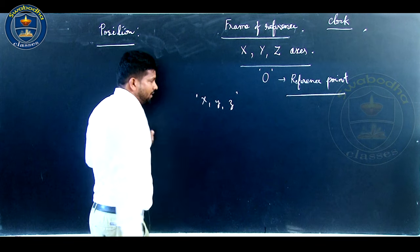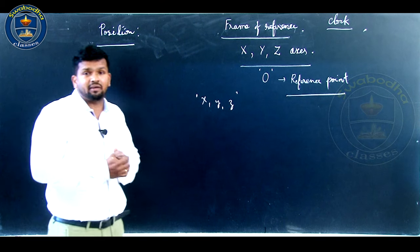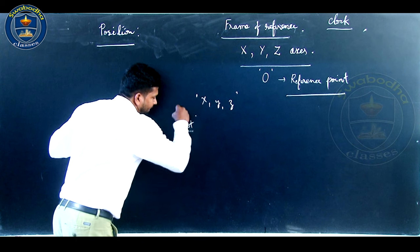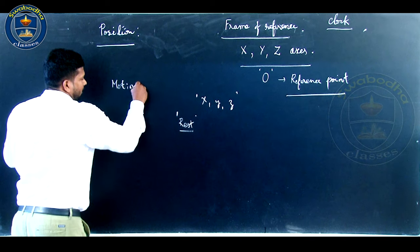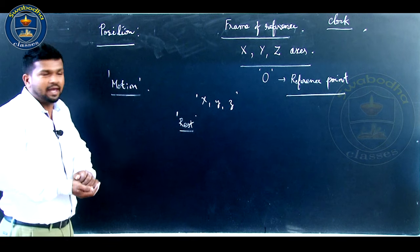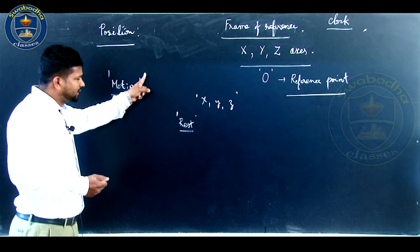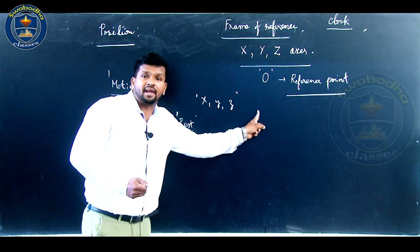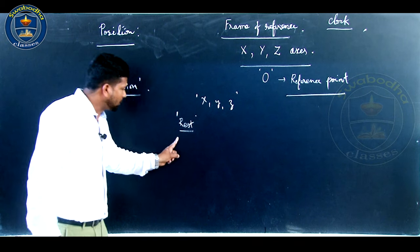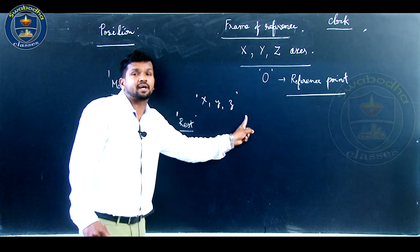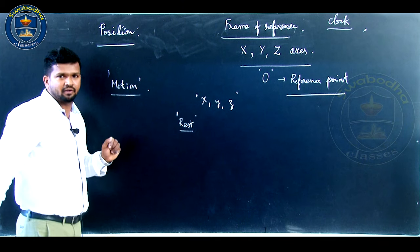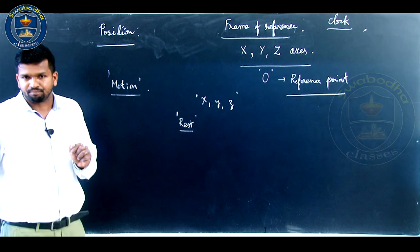If all coordinates x, y, and z are not changing with respect to time, the body is said to be at rest. So, if position changes with time, the position coordinates are changing — that is motion. If position is not going to change with respect to time, the body is at rest and the position coordinates are not changing. This covers the two terms: motion and rest.